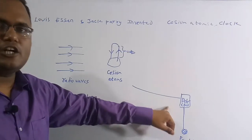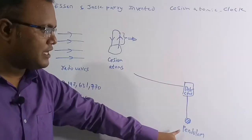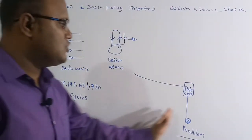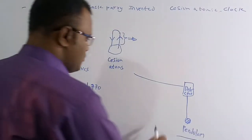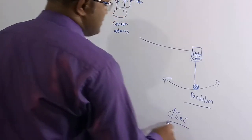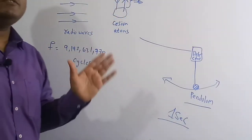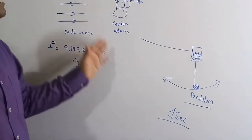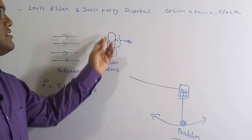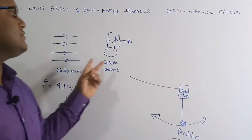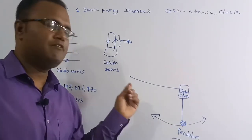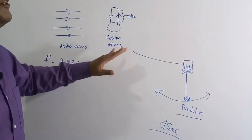The detector output is given to a pendulum. One transition makes the pendulum complete one full cycle, and that cycle is considered as one second. This is the basis of the standard time definition. The time period of the cesium transition is fixed, making it a reliable standard regardless of location in the galaxy.